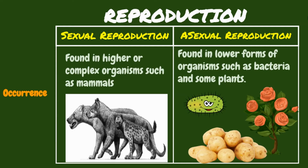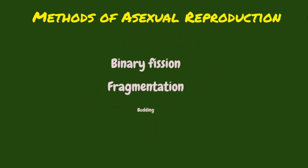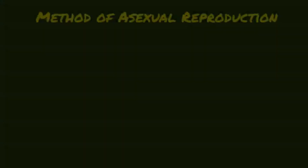As mentioned earlier, asexual reproduction has different methods of reproduction, namely binary fission, fragmentation, and budding. Let's discuss each of these methods separately.